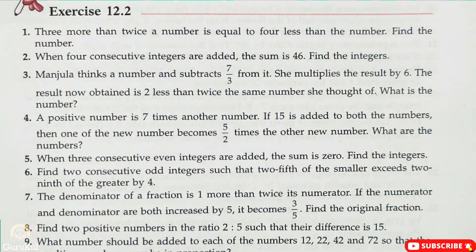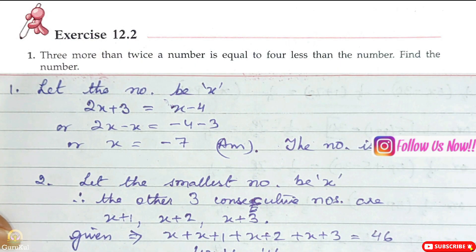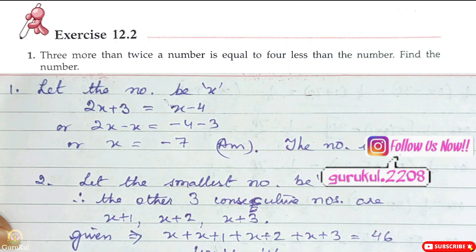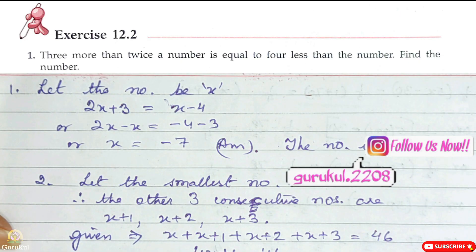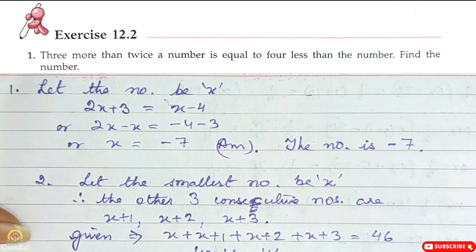Today I am going to start with Part 1 of Exercise 12.2. Question number 1: 3 more than twice a number is equal to 4 less than the number. Find the number.